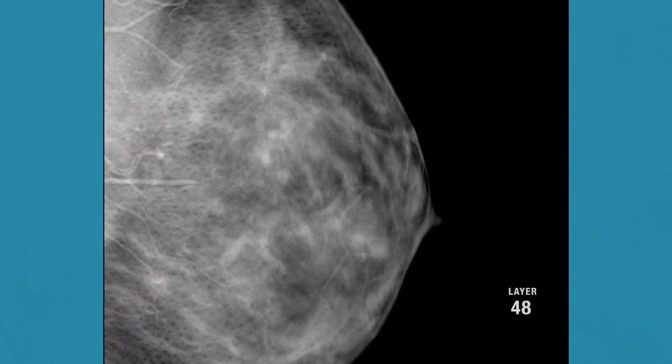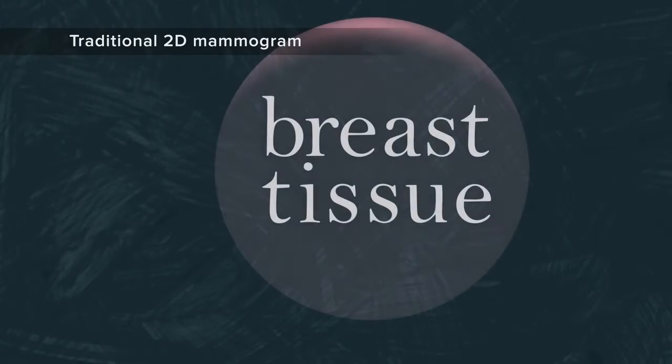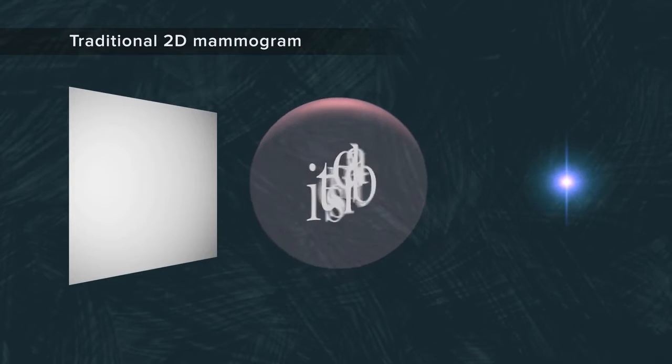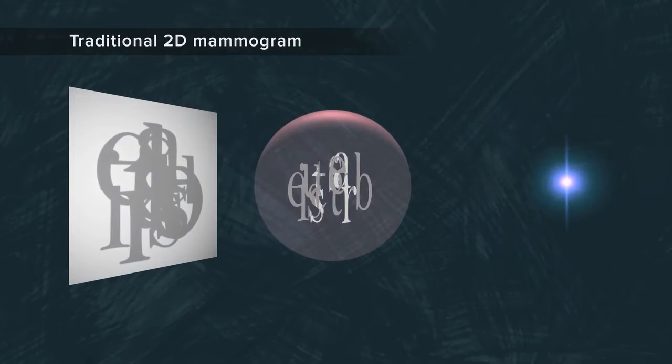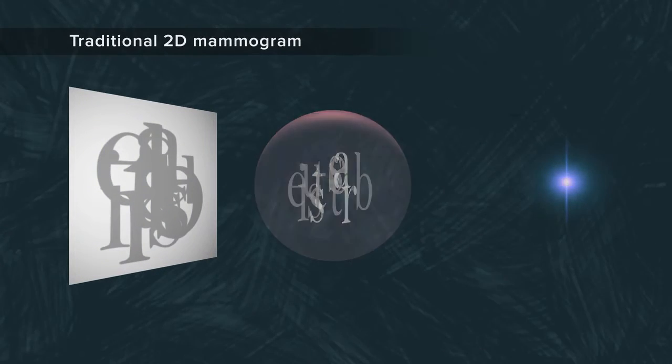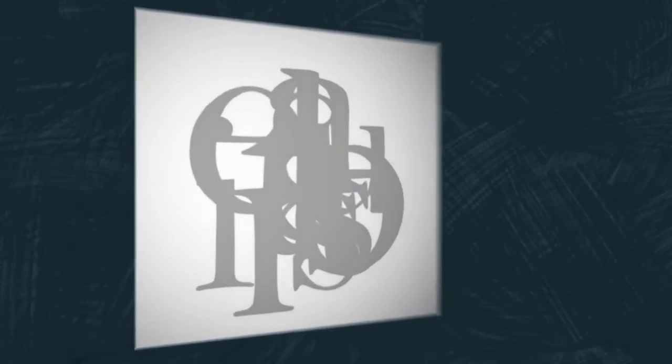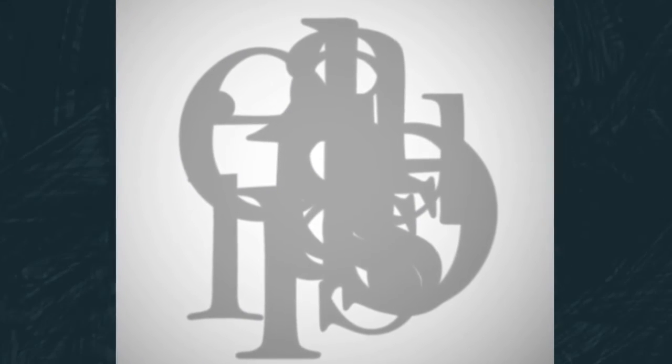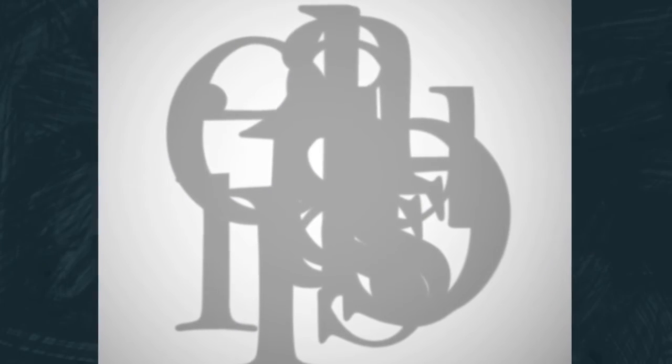Why is this a good thing? A traditional 2D mammogram shows all the breast tissue at a glance. That means one feature can hide in the shadow of another. So it might look like there's cancer where there isn't any, or there could be a tiny cancer we just can't see.